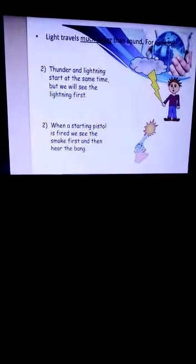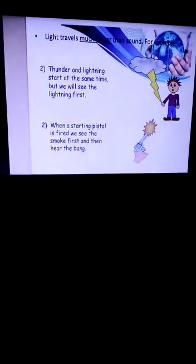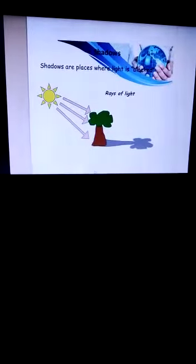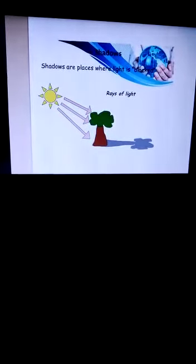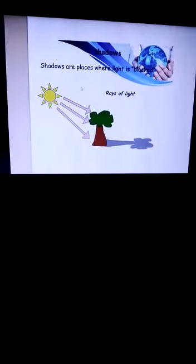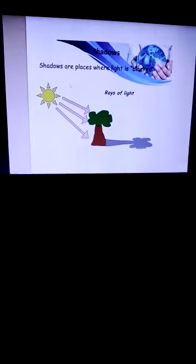Now we have said that light travels much faster than sound. Shadows. How are shadows formed? Shadows are the place where light is blocked. What happens when shadows are made? You know that light travels in straight lines.